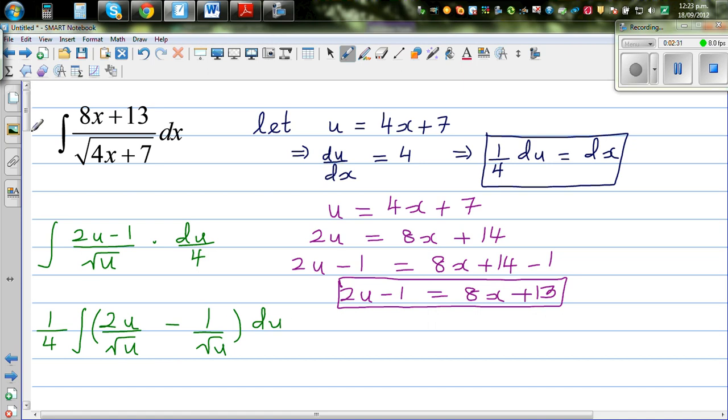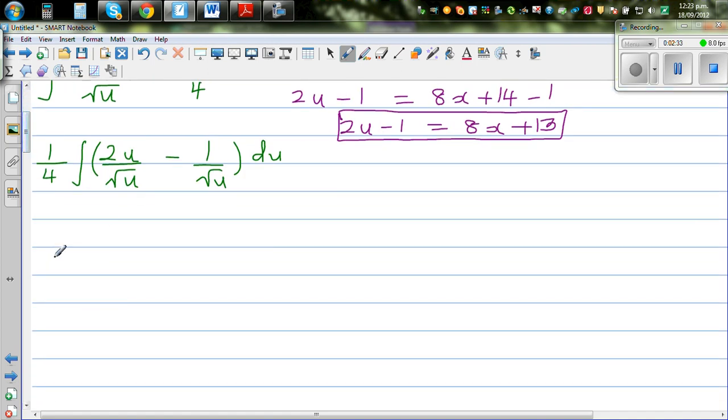Now square root of u is u to the power half. So this is 1 quarter times integration of 2u divided by u to the power half minus 1 over u to the power half du.